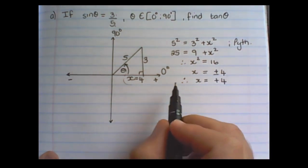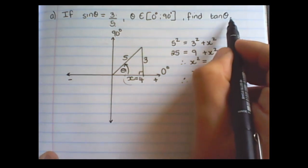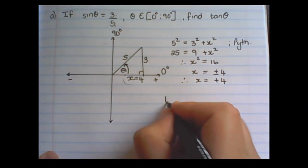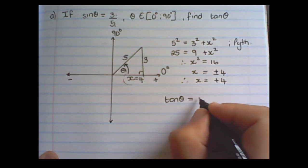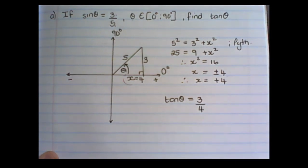And now that we have x, we can find tan θ. So tan θ is equal to the opposite, which is 3, over the adjacent, which is 4. If you can't remember the trig ratios, you need to go back to the ratio video.